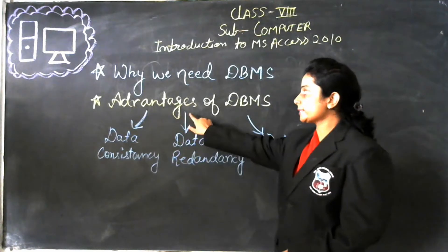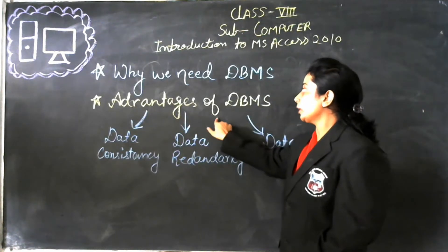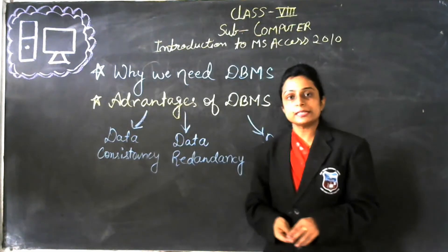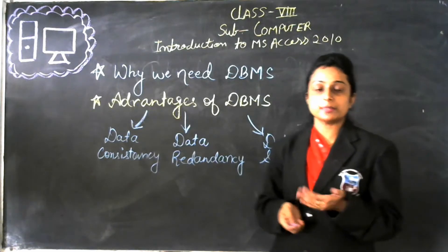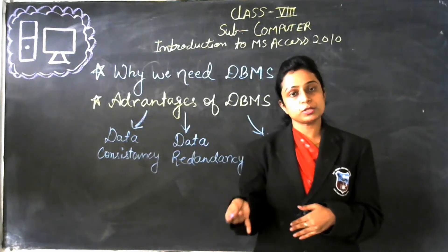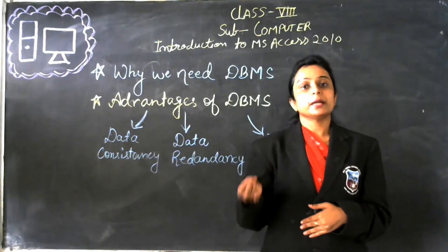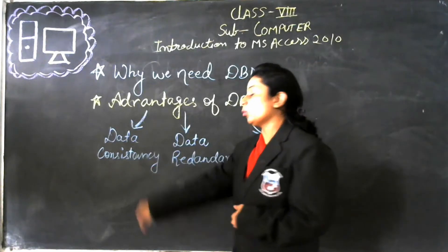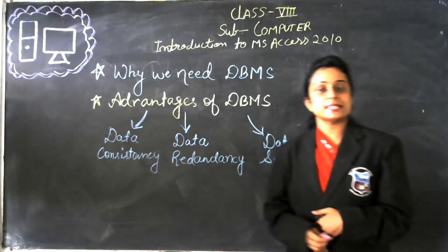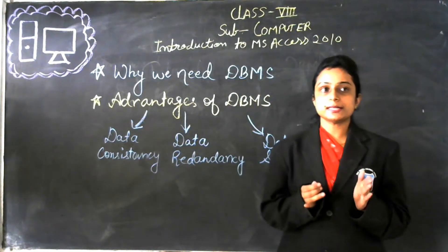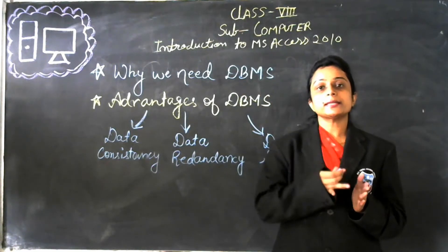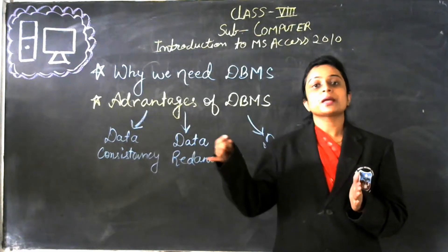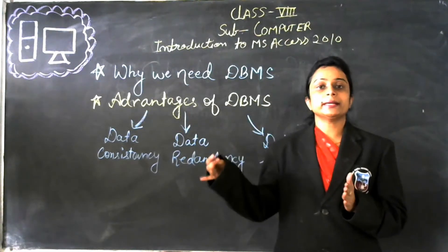Now the next term is advantages of DBMS. Obviously there are so many advantages of DBMS, that is why we are using it nowadays. The first is data consistency. Data consistency means there is a sequence and there is a relation between data — that is called data consistency.